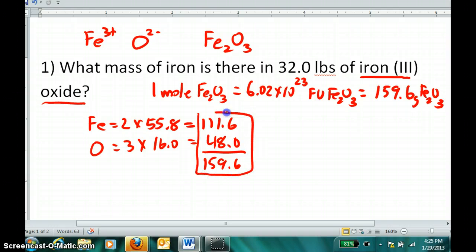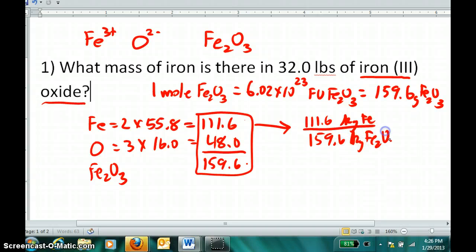But today, I want to focus on these ratios. What this is telling me is the majority of this total mass is iron, and only a small percentage is oxygen. And I can actually construct ratios out of these. For instance, there is a part-to-whole ratio of iron to iron(III) oxide. Namely, there are 111.6 grams, kilograms, whatever units you want of iron, for every 159.6 kilograms of iron oxide. And I can use this conversion factor, these ratios, to convert from mass of iron to mass of iron oxide, or vice versa, mass of iron oxide to mass of iron.